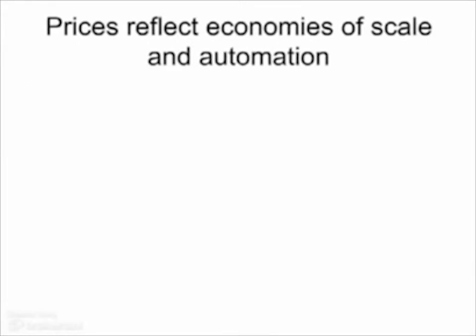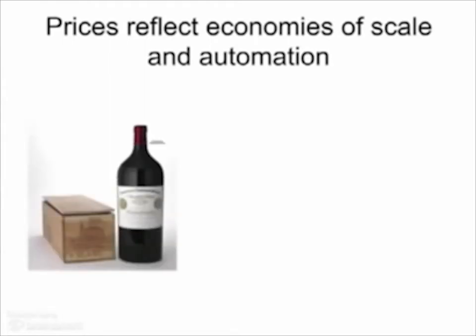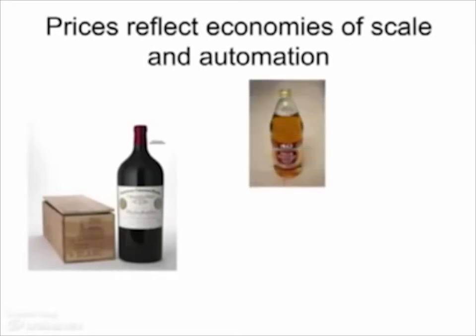Prices also reflect economies of scale and automation — things that make it cheaper to produce a product. It's not only the land something is made on, or the amount of capital based on the labor that went into it, that is important. It's also a matter of what people are willing to pay for things that take more or less time, and the fact that prices reflect this — which is not possible if you're using the average level of technology to determine the price. For example, you have a very fine wine that was very labor intensive, and then a very cheap beer made using a factory and economies of scale.